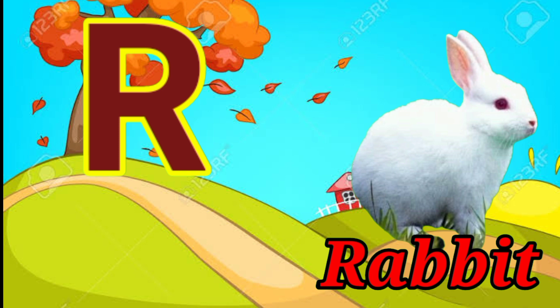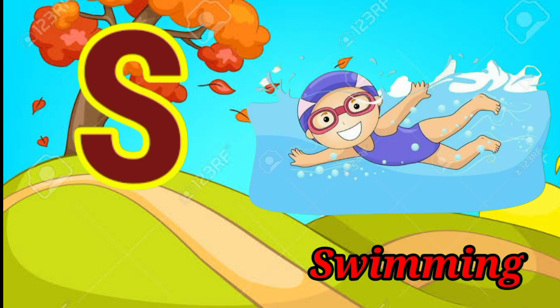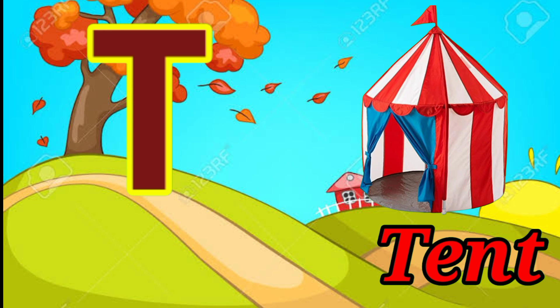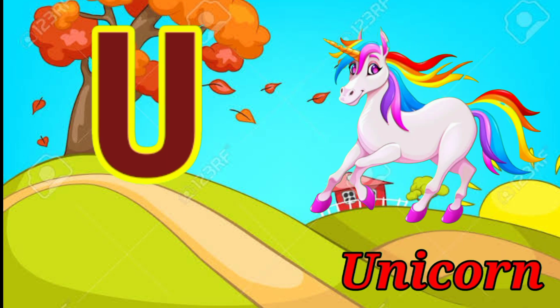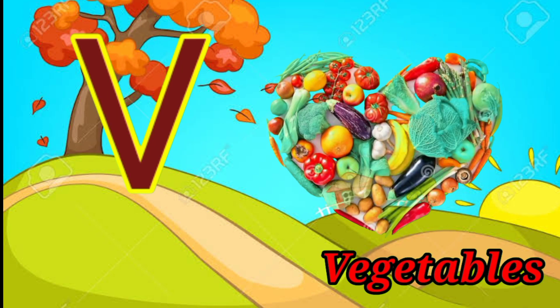R for rabbit. S for swimming. T for tent. U for unicorn. V for vegetable.